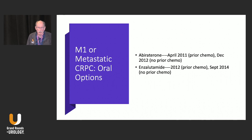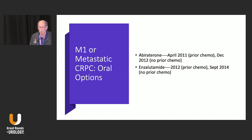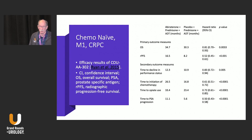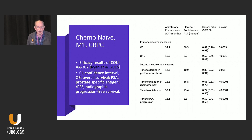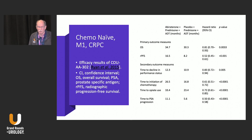In the M1 metastatic CRPC patient we have two oral options, and we've had them for over 10 years — abiraterone and enzalutamide. Initially they could only be used with prior chemotherapy, but a year or two later we were able to use them without prior chemotherapy. From the Ryan 2015 data looking at overall survival and radiographic progression-free survival, the number people remember is the four-month overall survival advantage with abiraterone versus placebo. For this very far advanced group with metastatic castrate-resistant disease, four months is very significant.